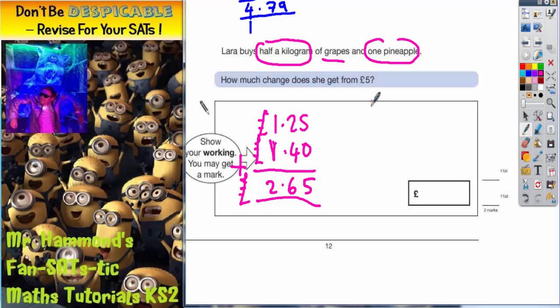So how much change does she get from £5? Well if we can make this add up to £5 we will get the change that she gets. So if I add on £2 I will get to £4.65. And then from £4.65 to £5 it will be an extra £0.35. So it looks as though the answer is £2.35.